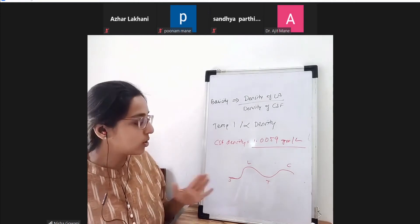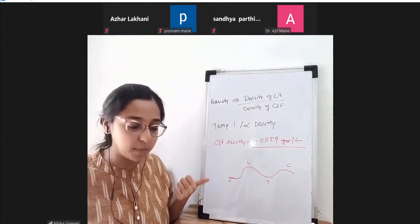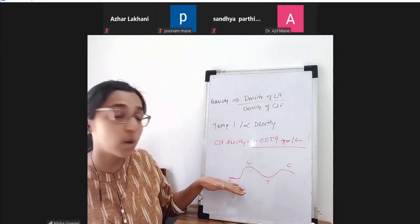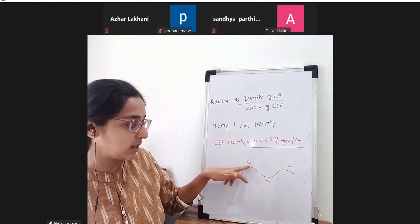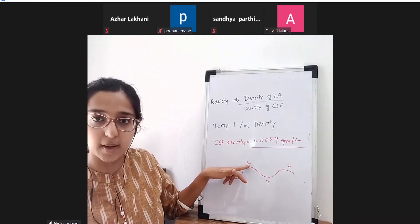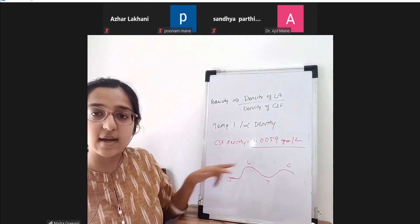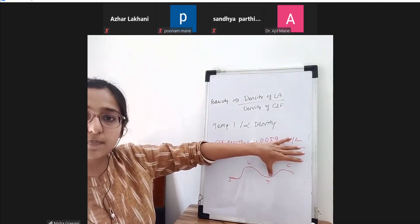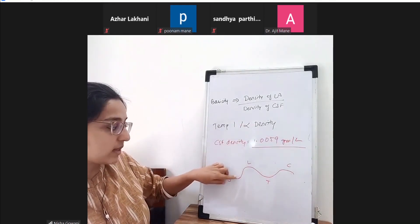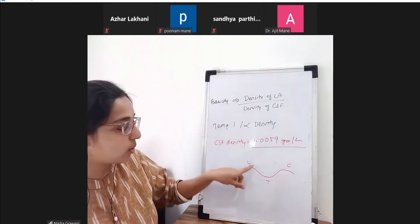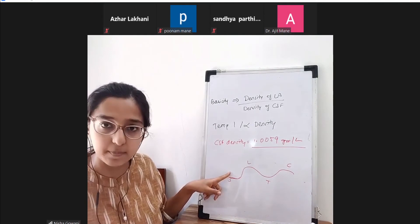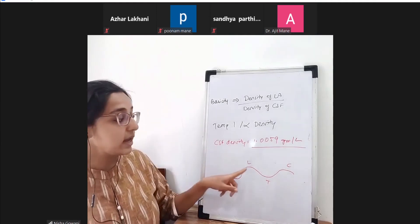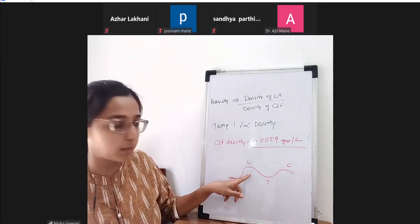When the patient is made supine after receiving a hyperbaric spinal drug, there will be bimodal spread — the drug dips down into the thoracic curve and also down into the sacrococcygeal curve, going in two directions. This is known as bimodal spread in the supine position when a hyperbaric drug is given.